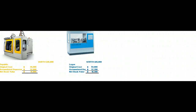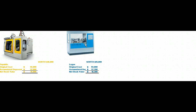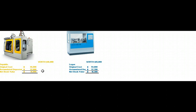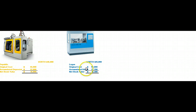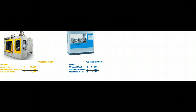Everything we've talked about so far has what's called commercial substance — something real happened. Now let's talk about trades where there is no commercial substance. Two companies, Republic and Logan, have molding machines that are both worth $16,000 and they're just going to trade them. Republic's machine was on its books for $14,000, so you'd think there'd be a $2,000 gain, but since we're accountants we don't let companies book gains on transactions without economic substance. From Logan's point of view, its old machine was on its books for $16,300, so you'd think the $300 difference would be a loss.